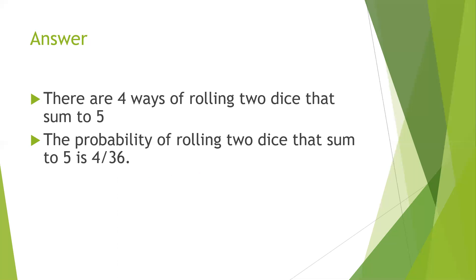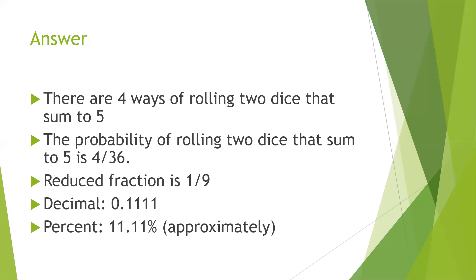And so when we reduce that, then we get our reduced fraction of 1/9. And then to get our decimal, we'll take 1 divided by 9 on your calculator. When we do that, we get 0.1111, and when you multiply that by 100, you get the percent. So that's our answer in this situation.